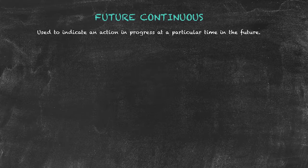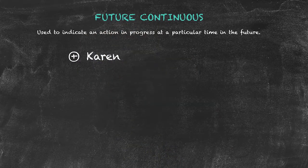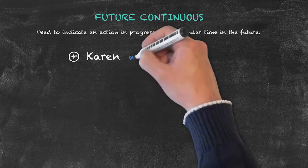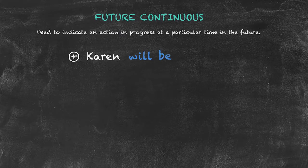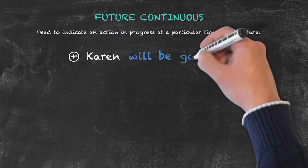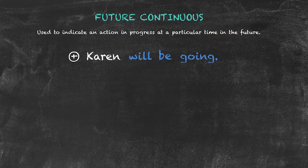To form this tense in the positive form, we have our subject — we've used Karen — the word 'will', our auxiliary verb, our helping verb 'to be', and then the present participle, or the verb plus -ing. So: Karen will be going.